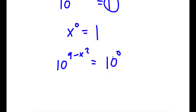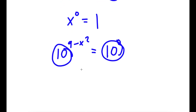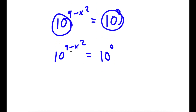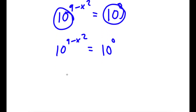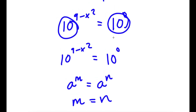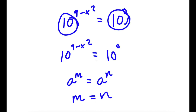The reason I did this is so that these two bases are the same — they're both 10. Now, if I have something in the form a to the power of m is equal to a to the power of n, this means that m is equal to n. Because both bases are 10, our exponents are going to be equal to each other as well, meaning 9 minus x squared is equal to 0.